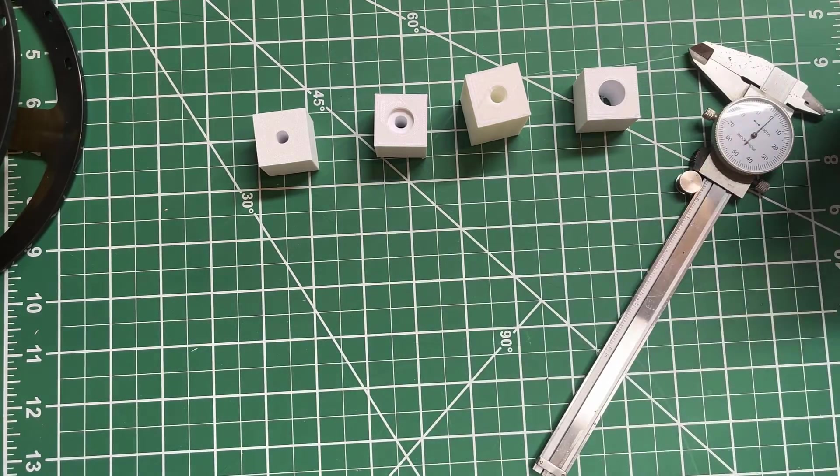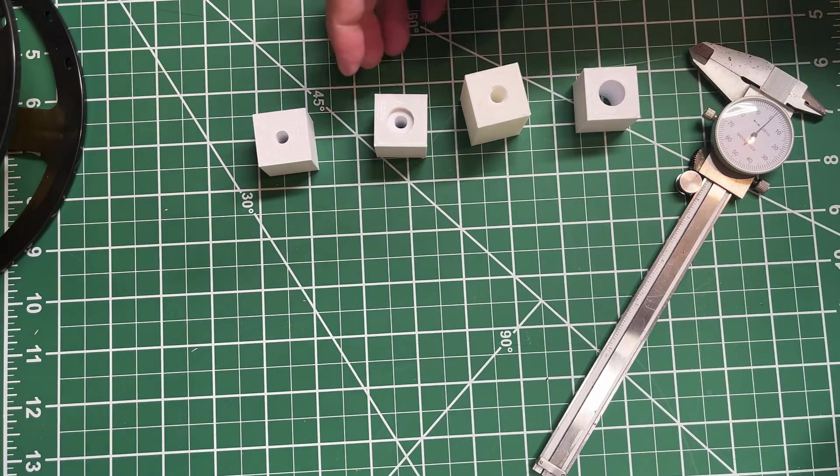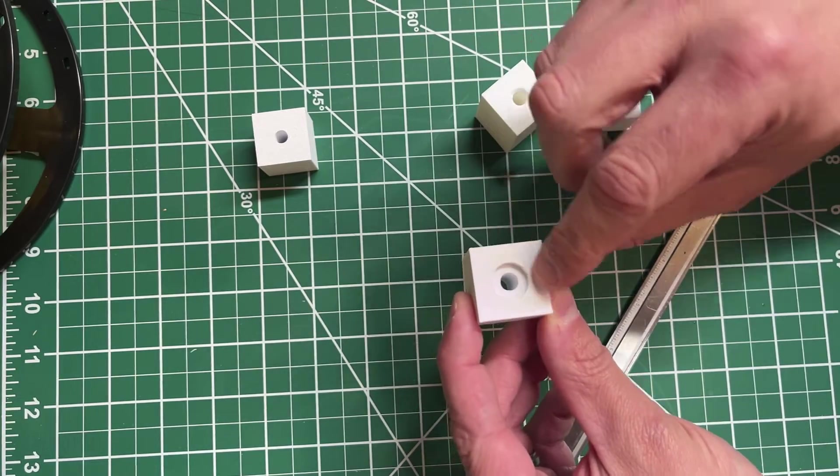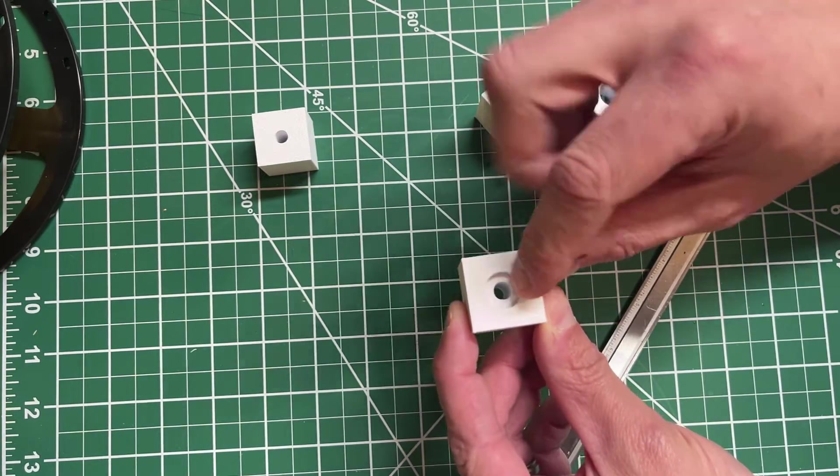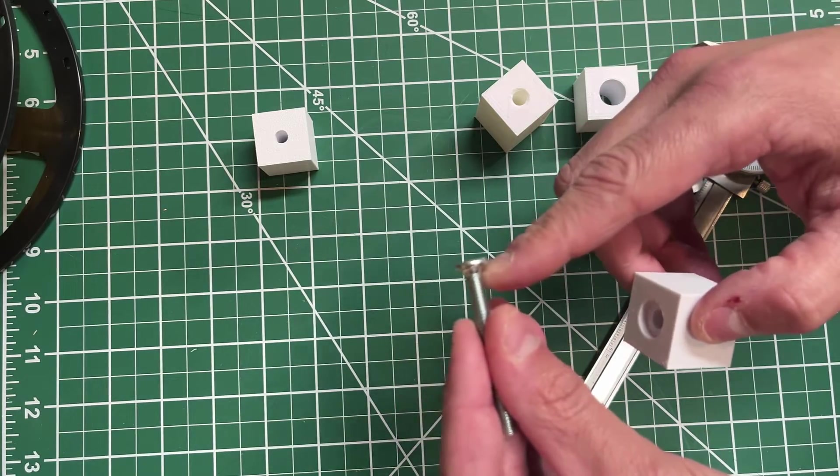And then we get to more specialty holes, but not really specialty holes. These are things you're going to see all of the time if you pay attention. The first one here is called a counter bore. Basically what it has, it has a big diameter and then a smaller diameter. What it does allows something like this, where the head is flat at the bottom, to sit in the part.